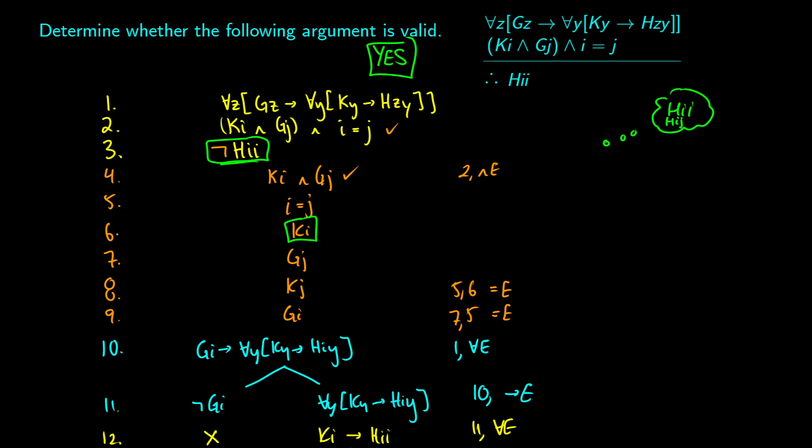This is how we use the identity operator in truth trees. If you have any questions, leave them below and hopefully me or someone else will be able to answer. Thank you.